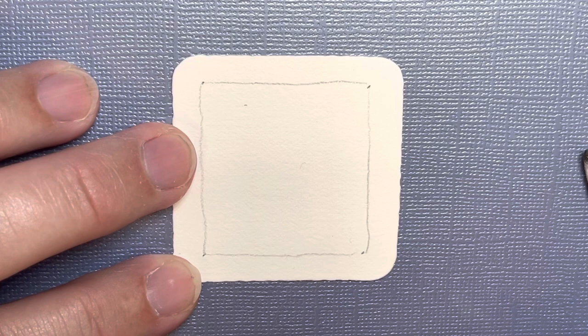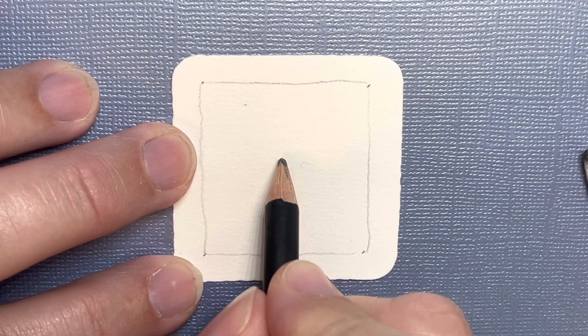And then for this tangle, we're going to start out by making a circle in the middle. And so I'm just going to do it with pencil first, just to make sure I kind of like where it's placed.